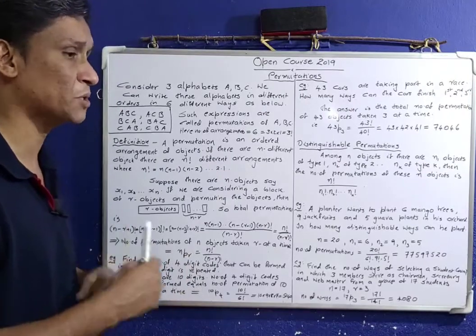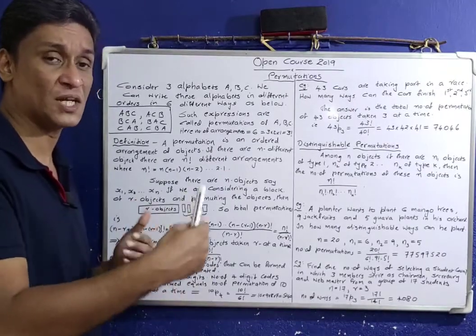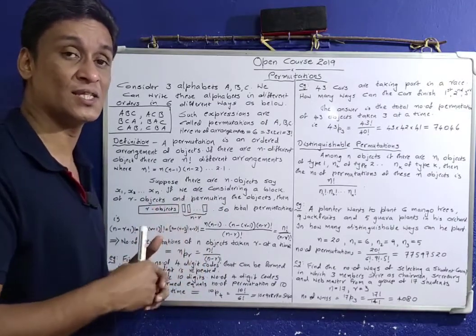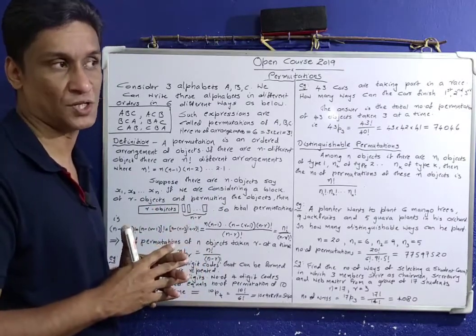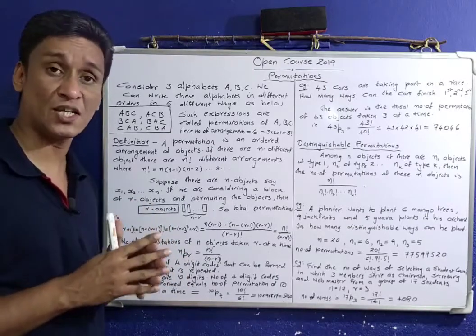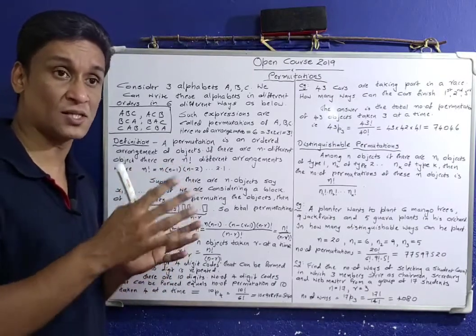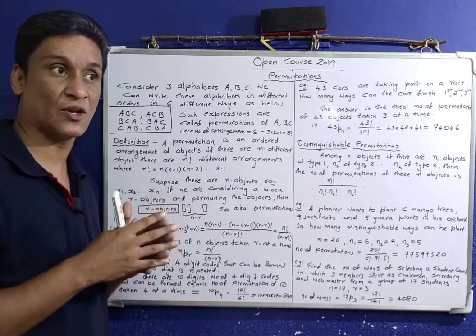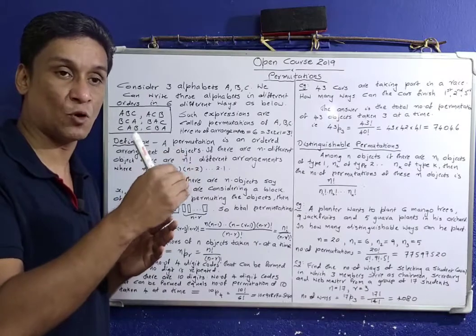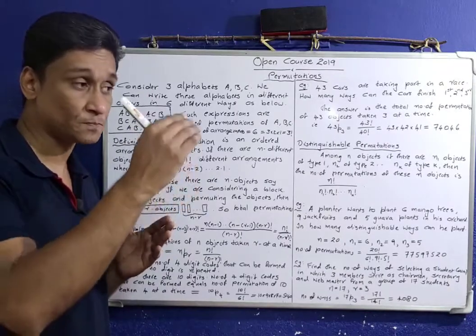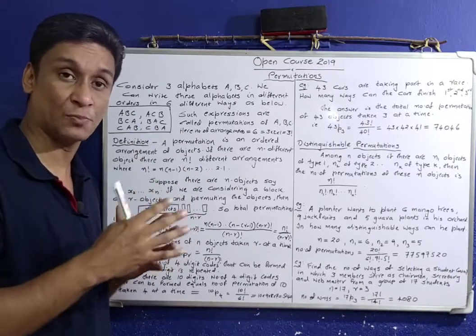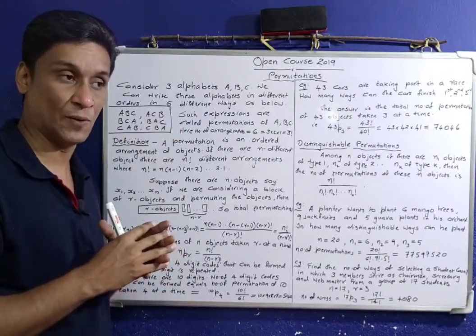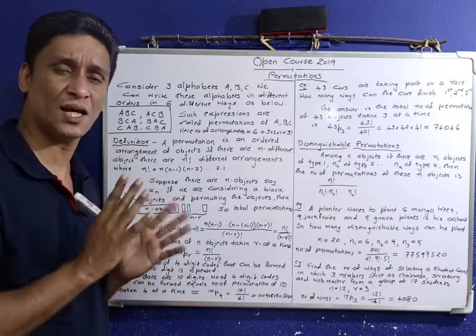One is a permutation. It is a permutation — it is an arrangement. Our arrangements are in an order. It is like a courier service — it is an address, it is an arrangement.